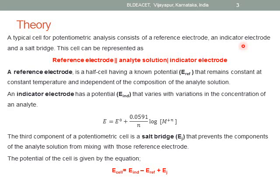A metallic electrode may be in the form of a platinum electrode, and a membrane electrode may be in the form of a glass electrode. The cell can be represented as a reference electrode separated by a salt bridge, and then the analyte solution which is in contact with an indicator electrode.